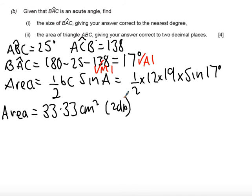And then finally there is a method mark for using the area of a triangle as a half BC sine A. And an answer mark if you've got an area of 33.33 centimeters squared. Okay. Well I hope the solution made sense and that you were able to follow how to mark it.